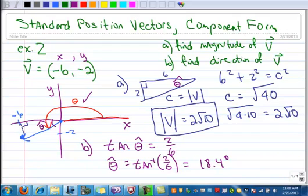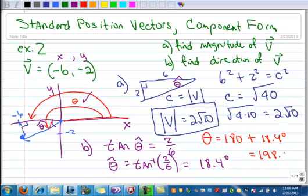So now to calculate the actual direction, well, it's 180 from here, from the x all the way from the positive x to the negative x. So I have to take the 180, and in this case then I have to add the 18.4 degrees to it. And when I do that I get 198.4 degrees. So that's the direction of that standard position vector.